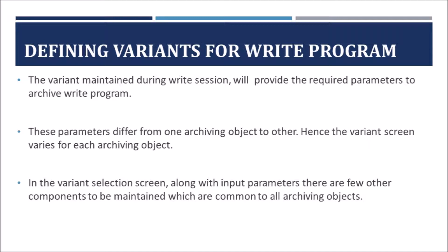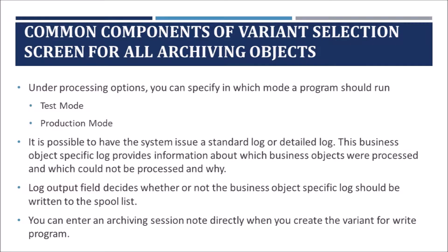Along with the input parameters specific to the archiving object, there are also some common components in the variant selection screen shared by all archiving objects. Under processing options, you can specify in which mode a program should run — either in test mode or in production mode. There is also a possibility to choose a business object specific log as a standard log or detailed log for the write program.